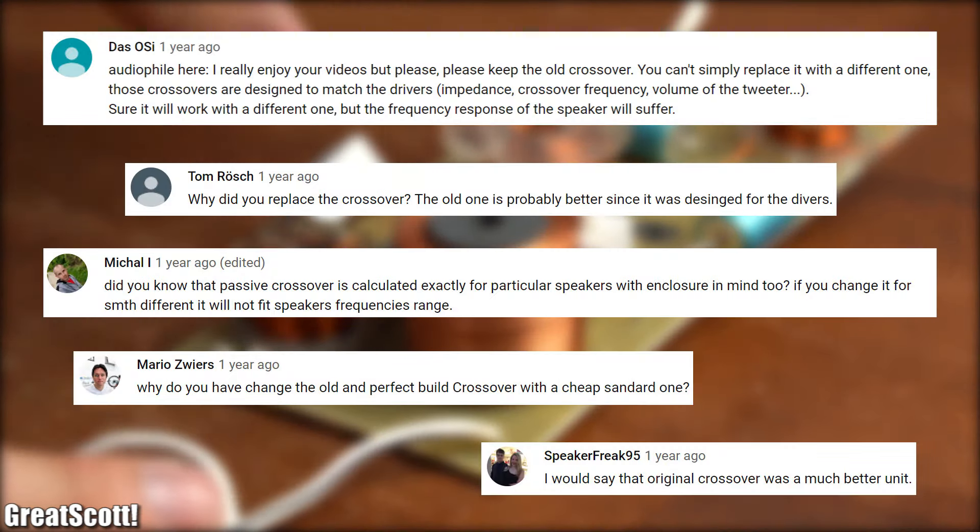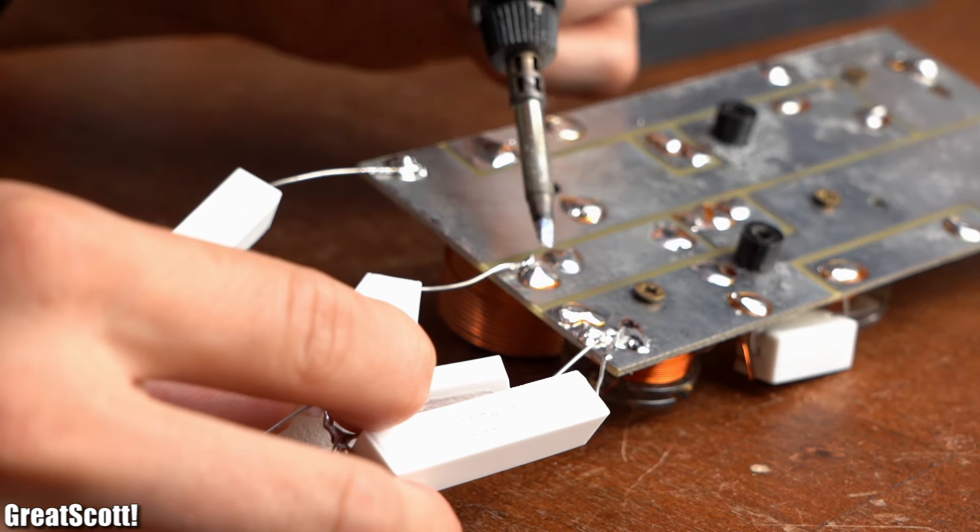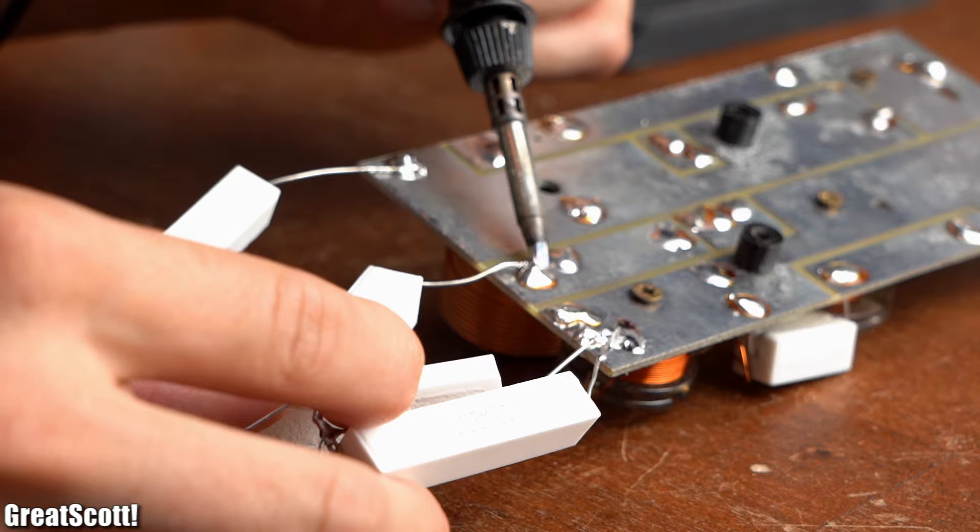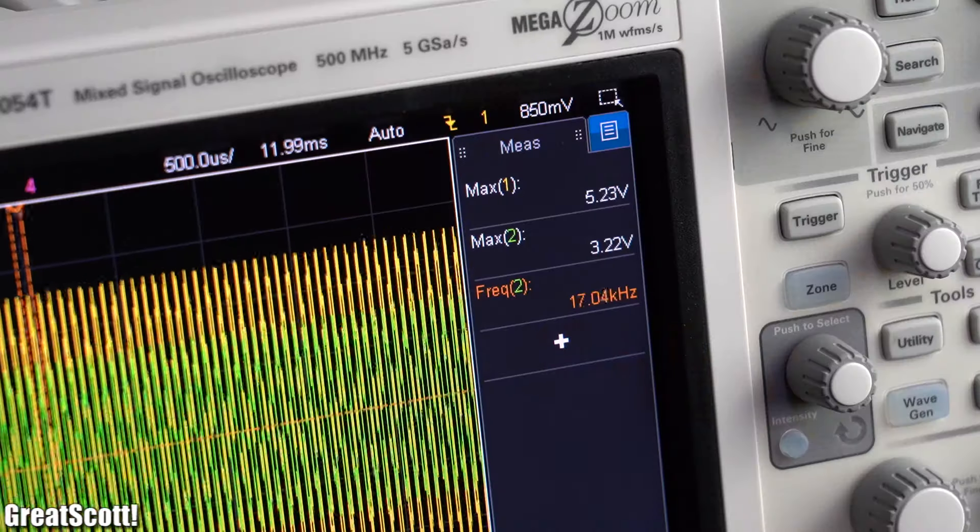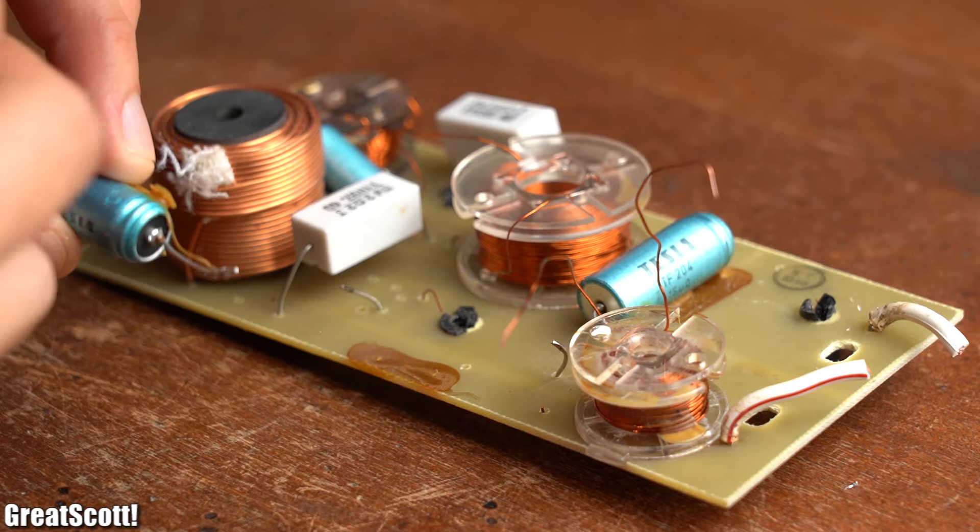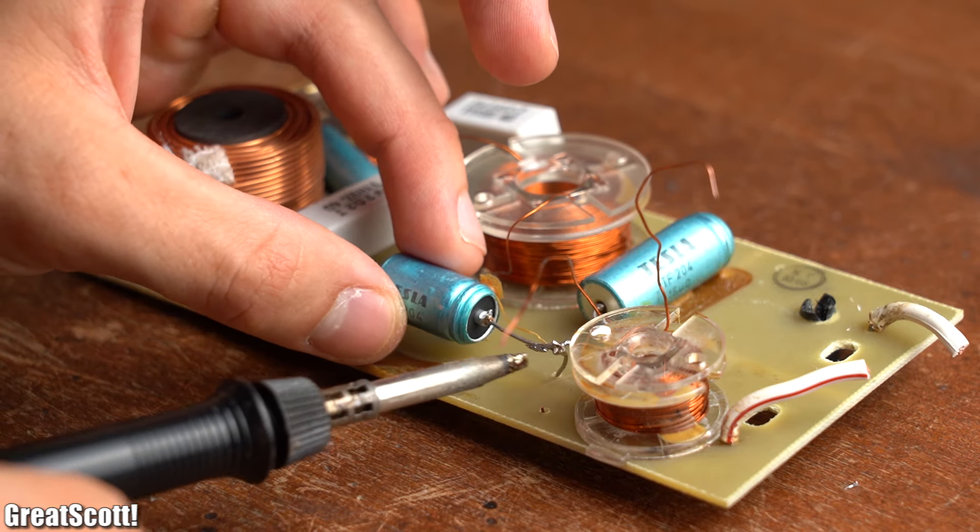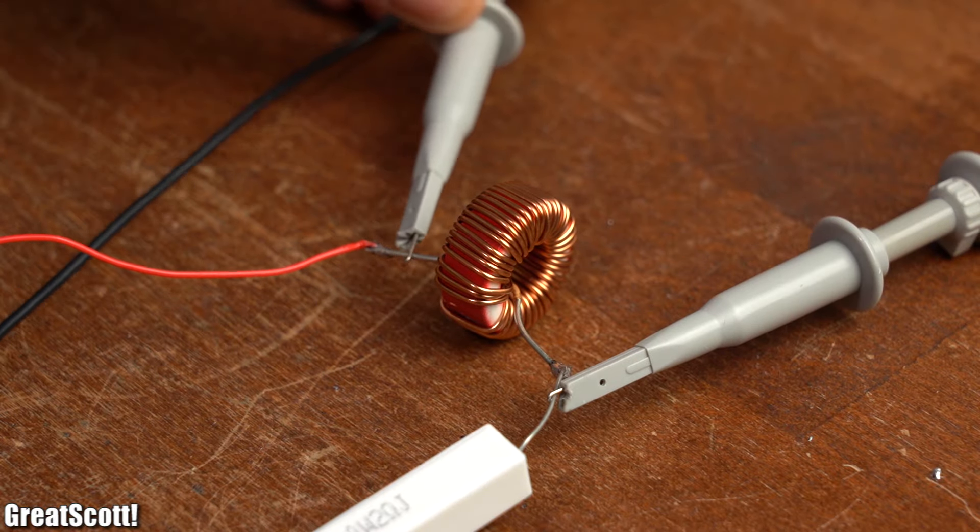Lots of viewers though seem to disagree with this replacement decision. So in this video we will find out how exactly audio crossovers and thus passive filters function, and how to theoretically calculate those in order to find out whether it makes sense to replace an existing audio crossover or even create a DIY one.